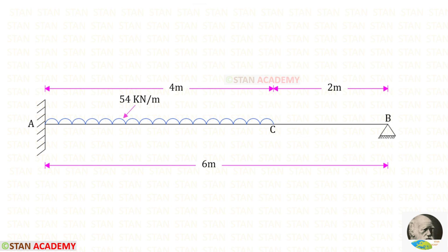Hello everyone. Today we are going to analyze this propped cantilever beam. In this beam, there is a uniformly distributed load of 54 kilo newton per meter. It acts for a distance of 4 meters from the left support.